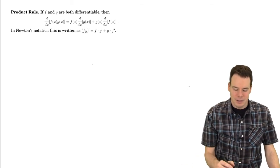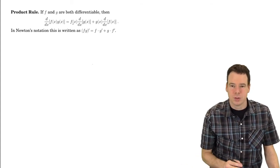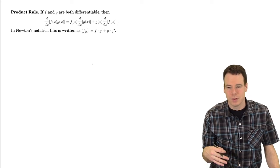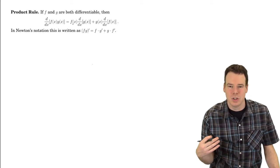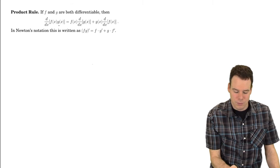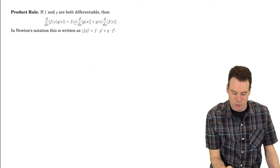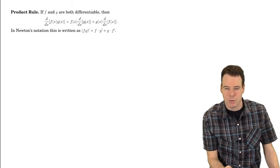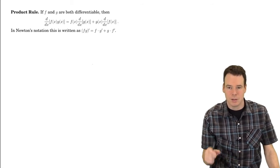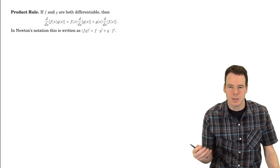In this video we're going to look at seeing why the product rule should be true. We're going to give basically a geometric reason suggesting why the product rule is the way it is. Why does it involve one of the functions untouched multiplied by the derivative of the other and then added to the opposite happening? Where is this coming from?